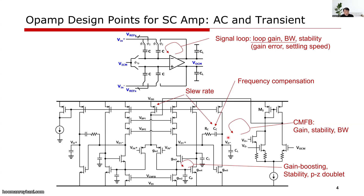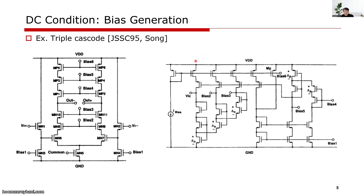For large signal input, slew rate must be considered, such as bias current and compensation capacitance. Some applications, like display drivers, require output current driving capability with dedicated output stages. I found that many students are not good at how to generate op-amp bias, especially when the op-amp has many stacks. We need to guarantee both signal swing and transistor operation in the saturation region.